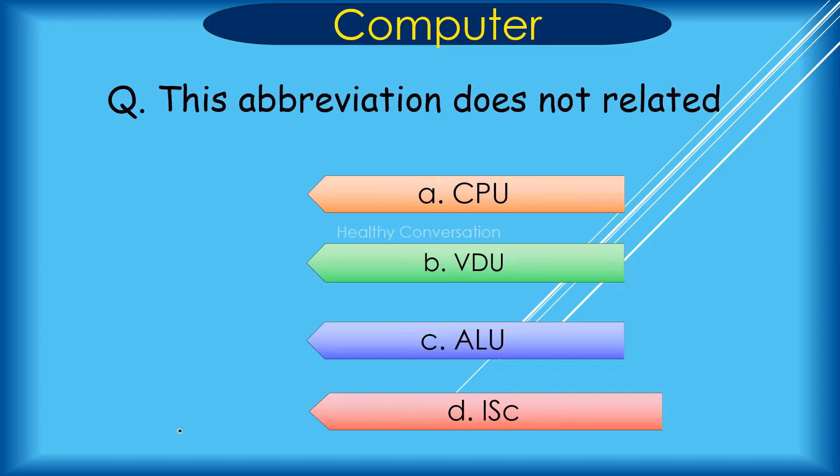Question: This abbreviation does not relate to computers. A. CPU, B. VDU, C. ALU, D. IC. Correct answer is D. IC.